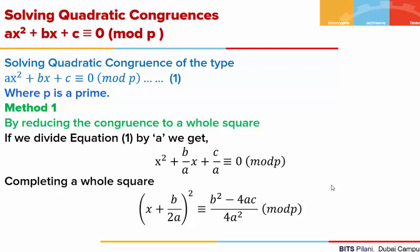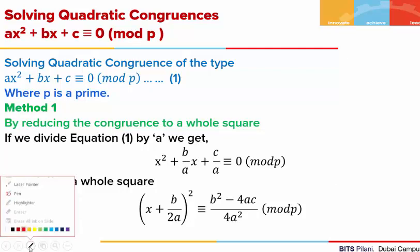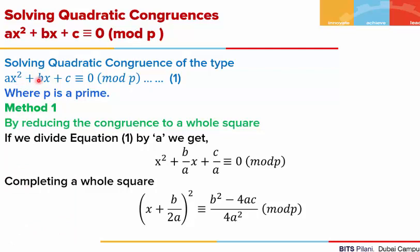We will be solving such congruences by three different methods. In the first method, given any congruence of the type ax² + bx + c ≡ 0 mod p, where p is some prime integer, we divide the congruence by a on both sides, giving us x² + (b/a)x + (c/a) ≡ 0 mod p.